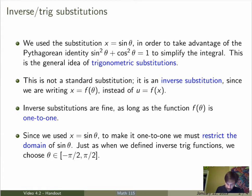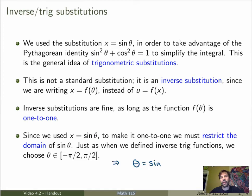With that restriction, sinθ becomes one-to-one and we can invert the relation to get θ equals inverse sine of x, which is exactly what we used in the last step of the previous calculation. So this is the general idea — let me now do a more complicated example.